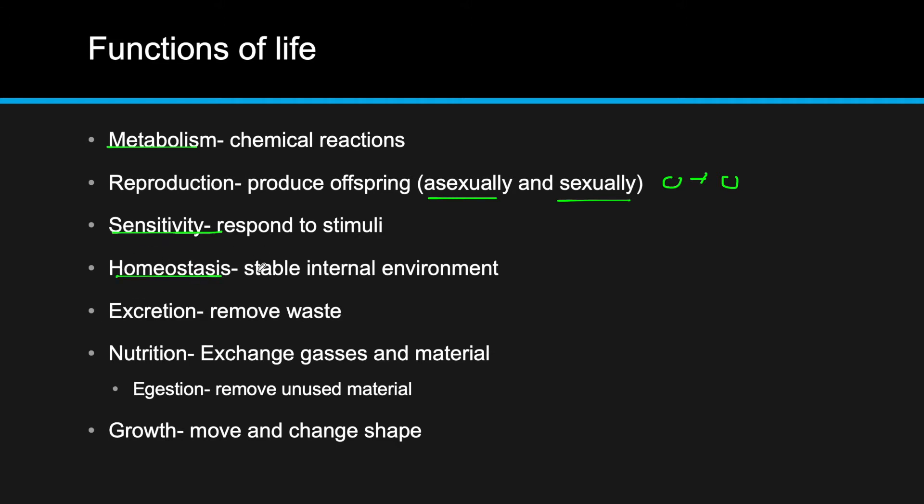Homeostasis: every organism must be able to maintain a stable environment. This happens through all the other things such as metabolism, excretion, nutrition, and growth. Excretion is the removal of waste. It's worth noting that here it's metabolic waste—basically the byproducts of chemical reactions that the cell needs to get rid of.